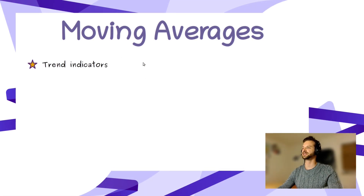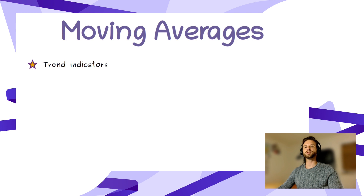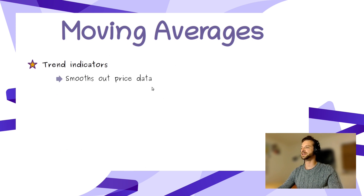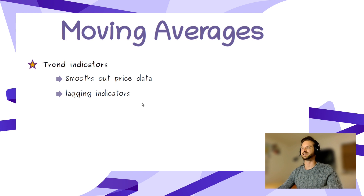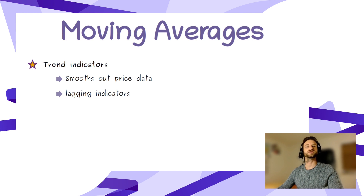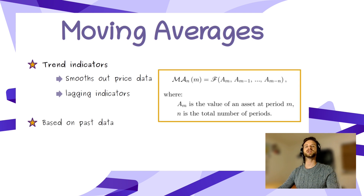Moving averages are trend indicators. There are about four families of indicators: trend, momentum, volatility, and volume. So moving averages are there to help you understand where the price of an asset is going. It does that by smoothing out price data. You will often hear that moving averages are lagging indicators, meaning they seem like they're often one step too late in predicting the price of an asset. But be careful — this is not said in a bad way. It is virtually impossible to predict the future value of an asset, and moving averages are not used for that. They are basically tools to help you understand the trend of an asset. Moving averages are also sometimes used to find regions of support and resistance for an asset, but that is something I will not get into today.